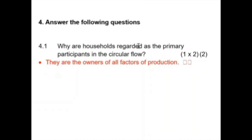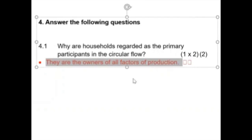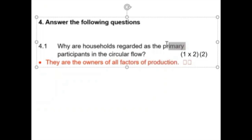Why are households regarded as the primary participants in the circular flow? Because they are the owners of factors of production. We can't make anything from nothing — we need the factors of production. It is the starting point of the economy, and that is why we call them the primary participants. When I asked my learners who is the largest contributor in the economy, the answer is the consumer — we spend the most.